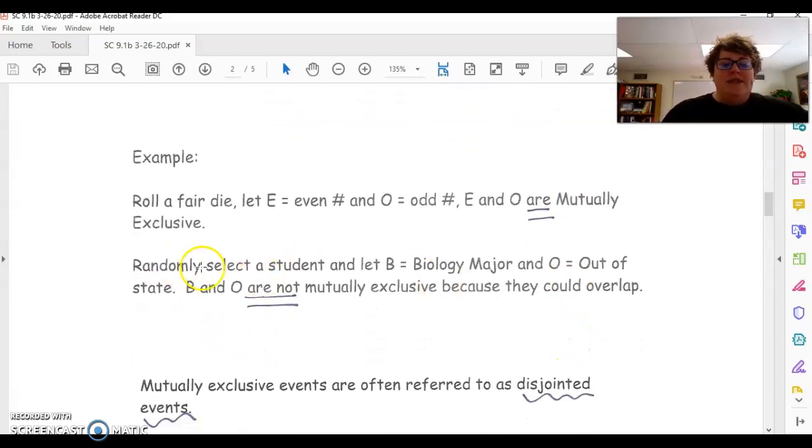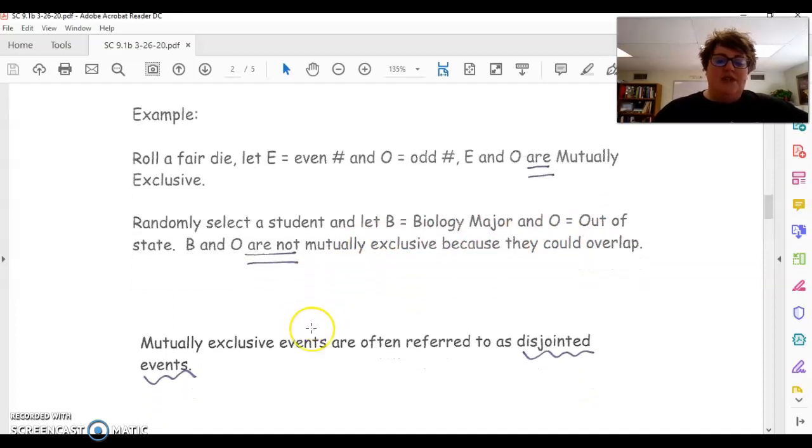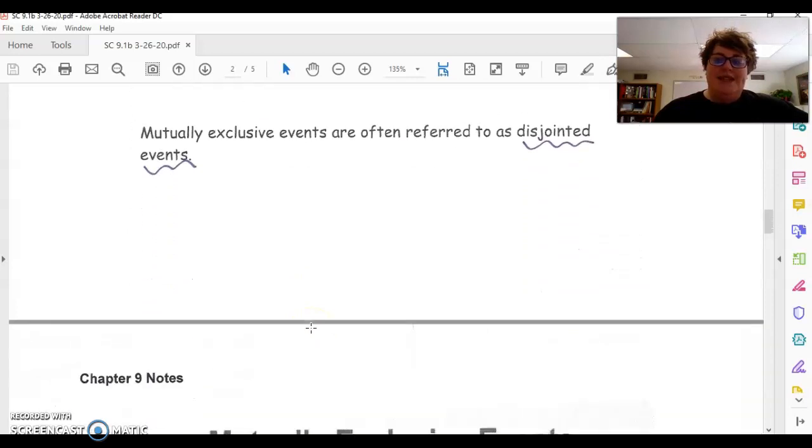Now, a randomly selected student let B be a biology major and O be out of state. So B and O are not mutually exclusive because I could have a biology major who is from out of state. So both of those could happen. So that's what it means because there's overlap. So it's not mutually exclusive. So mutually exclusive are also considered disjointed events.